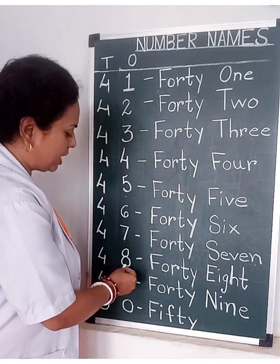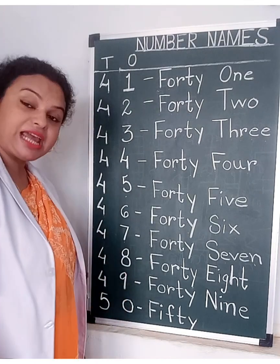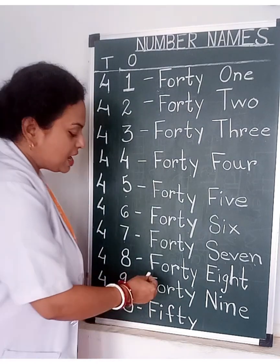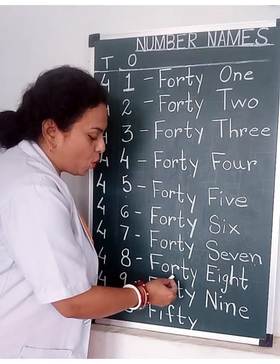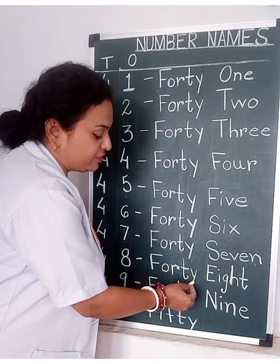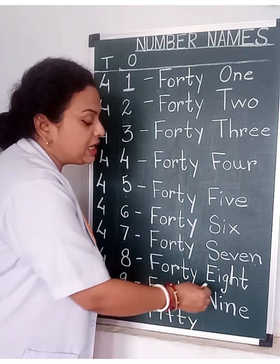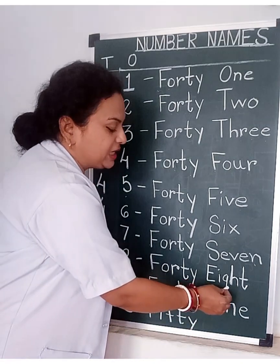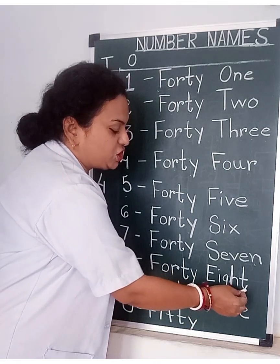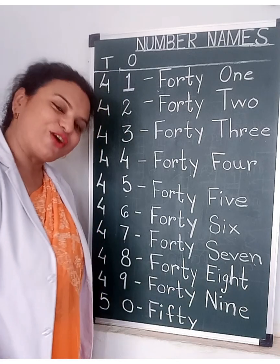4, 8 — 48. F, O, R, T, Y — FORTY. E, I, G, H, T — EIGHT. 48.